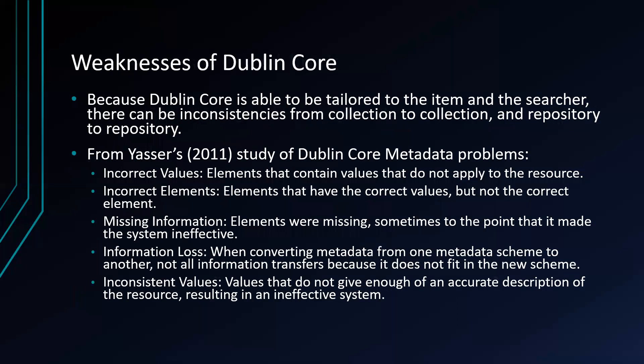The weaknesses of Dublin Core: because Dublin Core can be tailored to the item and the searcher, there can be inconsistencies from collection to collection and repository to repository. From Yasser's study, he found five problems. First, incorrect values — elements that contain values that do not apply to the resource. Second, incorrect elements — elements that have the correct values but are not placed in the correct element. Third, missing information — elements were missing, sometimes to the point where it made the system ineffective.